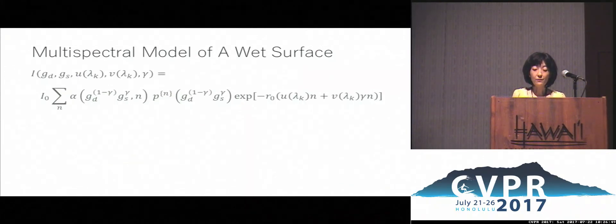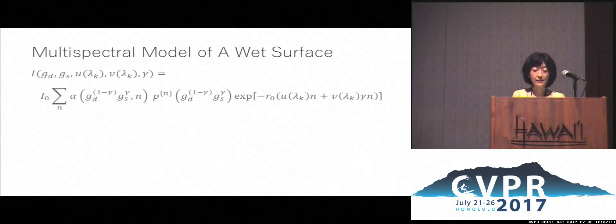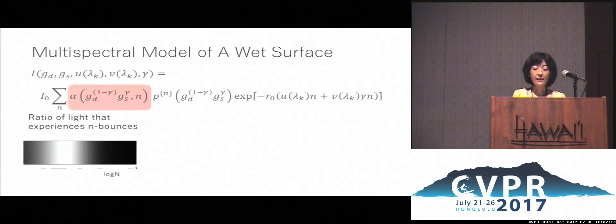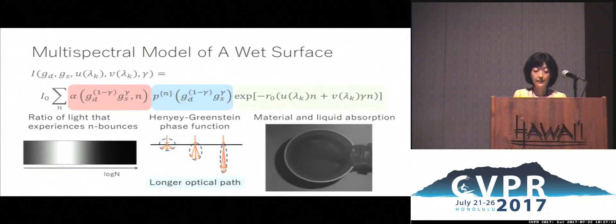We derive a unified model for these phenomena from the ground up, accounting for light scattering and absorption by the material and the liquid. In summary, the spectral appearance of a single surface point is the dry colour value I₀ scaled by the summation over n bounces of the multiplication of three terms: alpha, which encodes the ratio of light returning to the surface after n times scattering; P, a phase function which encodes the forward-centred scattering for wet surfaces; and the increased light absorption by the material and liquid due to the longer path length.